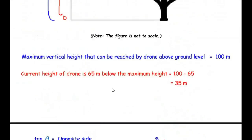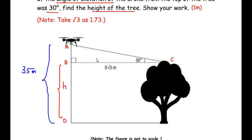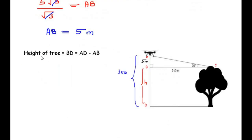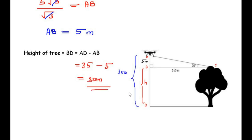AB is 5 meters. Coming back to the diagram, AB = 5 meters. Since we need to find BD, the height of the tree, it equals the total height at which the drone is minus AB. Height of tree BD = AD − AB = 35 − 5 = 30 meters. The height of the tree is 30 meters.